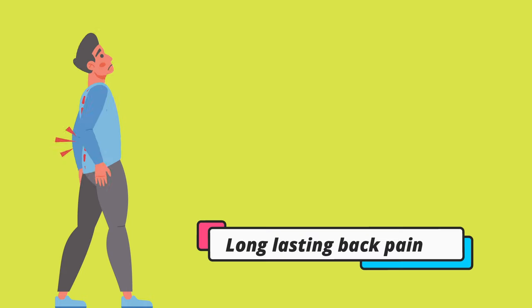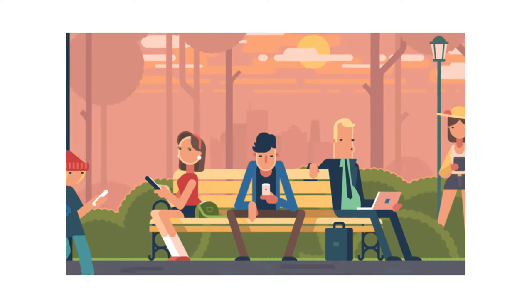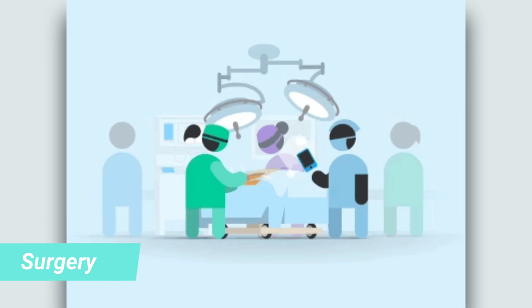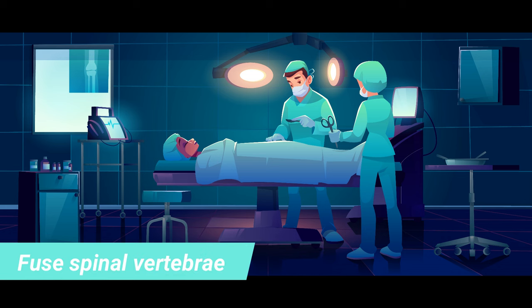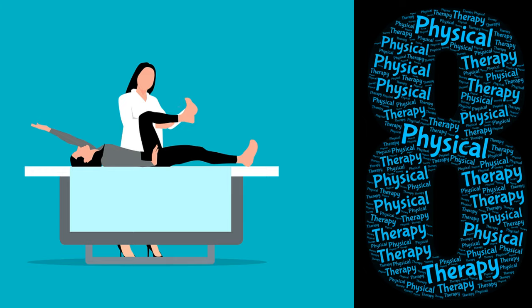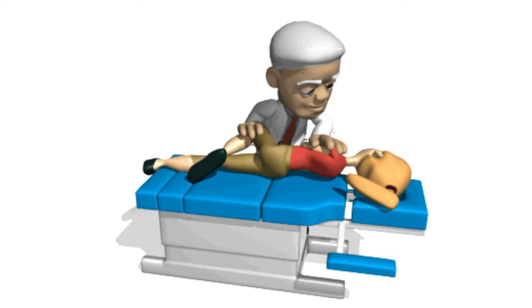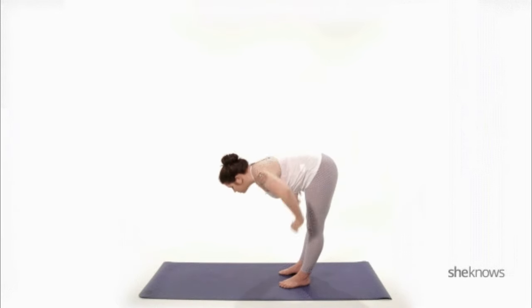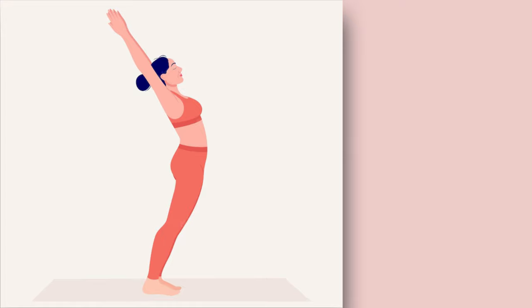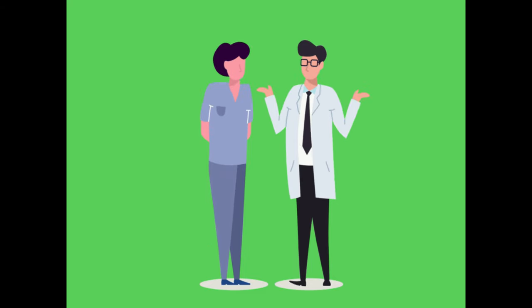Next is surgery. If long-lasting back pain is interfering with your daily life and other treatments have not provided relief, you may be a candidate for surgery. Depending on the cause of your pain, a surgeon may remove a herniated disc, widen the space around the spinal cord, or fuse two spinal vertebrae together. Next is physical therapy. If back pain has left you inactive for a long time, a rehabilitation program can help you strengthen your muscles and get back to your daily activities. A physical therapist can guide you through stretches, strength exercises and low-impact cardio without straining your back. In strengthening exercises, flexion exercises involve bending forward to stretch and strengthen the muscles of the back and hips, while extension exercises involve bending backward to develop the muscles that support the spine.